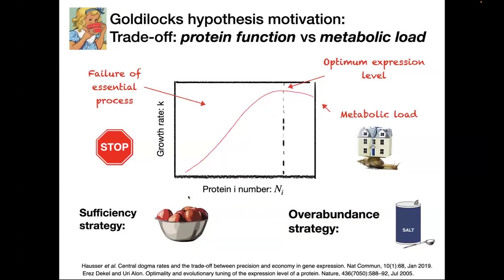What's the motivation for this Goldilocks hypothesis? If the levels are too low, you get failure of essential processes. On the other side, the metabolic load — if you make a lot of extra protein, this is going to slow down the growth rate. That's widely accepted and basically correct. But I hope to persuade you that this optimization problem is more difficult and more interesting than you think.